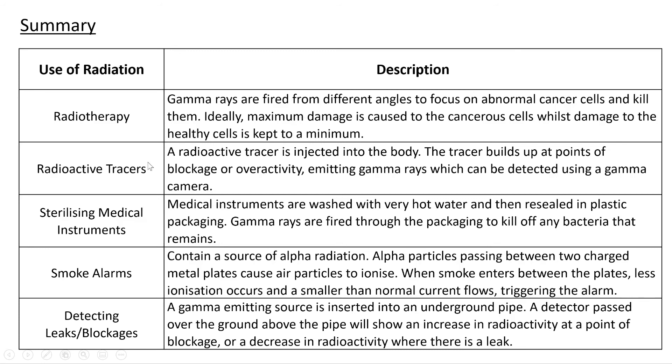Radioactive tracers: a radioactive tracer is injected into the body. The tracer builds up at points of blockage or overactivity, emitting gamma rays which can be detected using a gamma camera. Sterilizing medical instruments: medical instruments are washed with very hot water and then resealed in plastic packaging. Gamma rays are fired through the packaging to kill off any bacteria that remains.